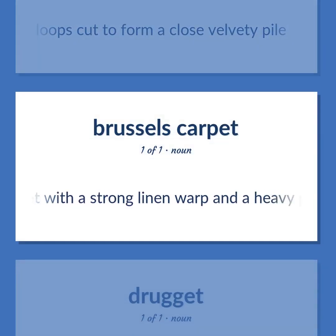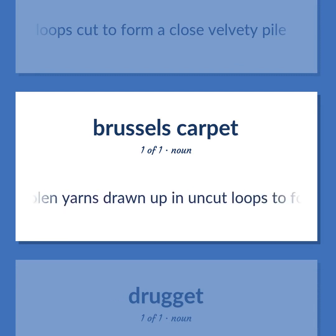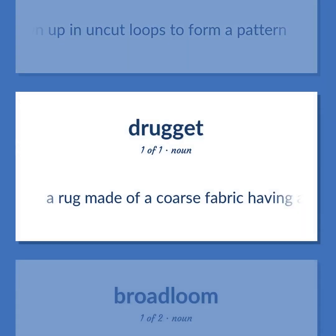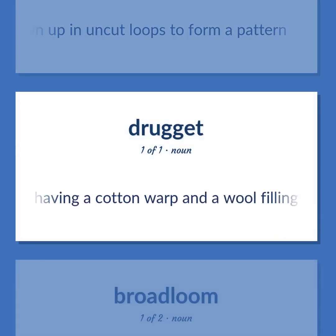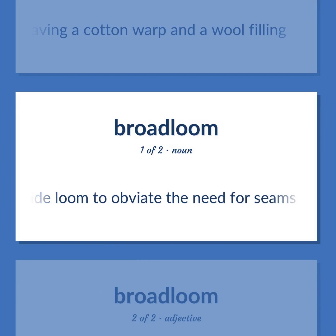A carpet with a strong linen warp and a heavy pile of colored woolen yarns drawn up in uncut loops to form a pattern. A rug made of a coarse fabric having a cotton warp and a wool filling.